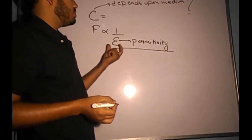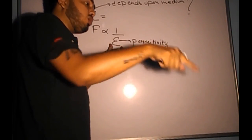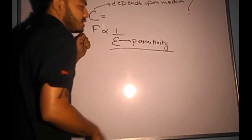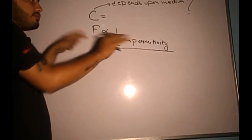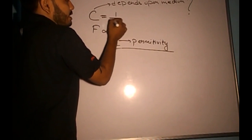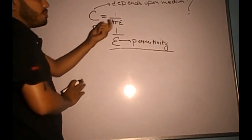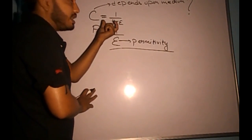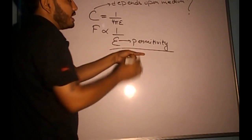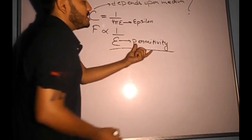Permittivity epsilon (ε) denotes how much the medium allows its own lines of force to interfere between the lines of force of the charges. The more it interferes, the more the force decreases. That is why C is written as 1/(4πε). The 4π is the solid angle, which you will study later in Gauss's law. This epsilon is known as permittivity.